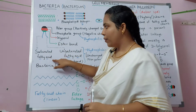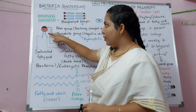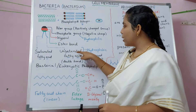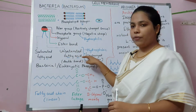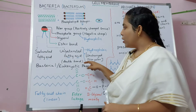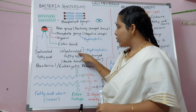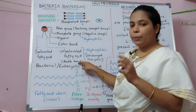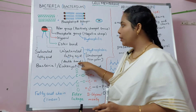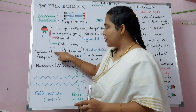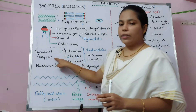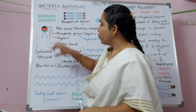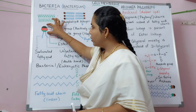The chain that is bent is called an unsaturated fatty acid. Unsaturated fatty acids have double bonds in them, while saturated fatty acids have only single bonds.